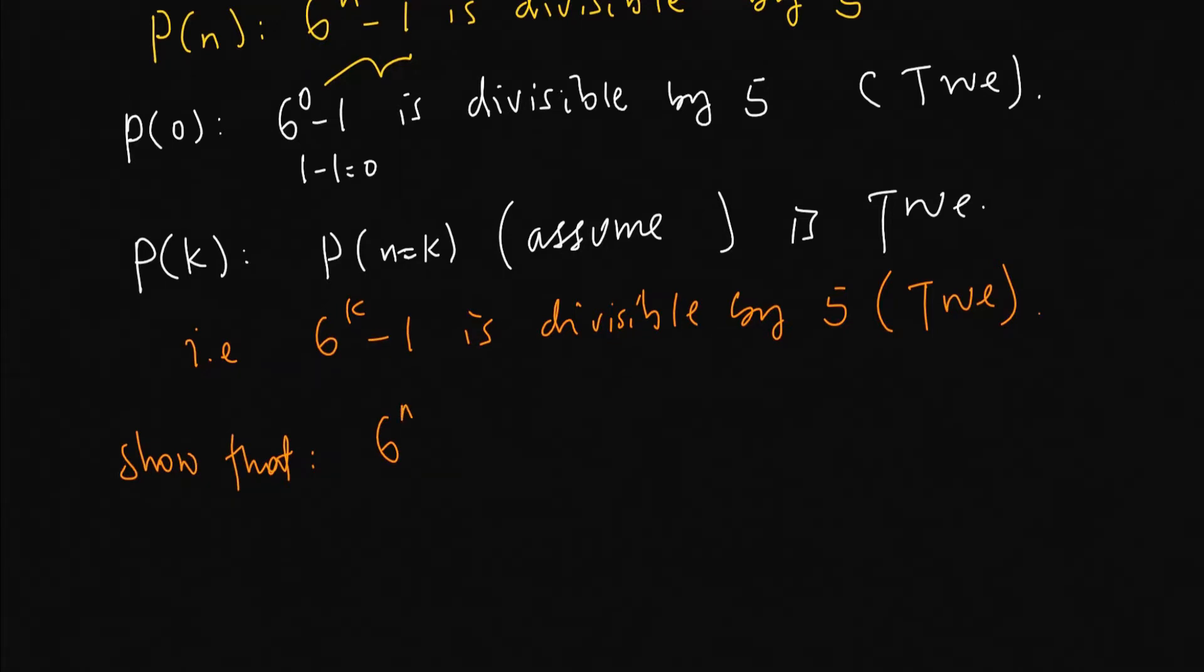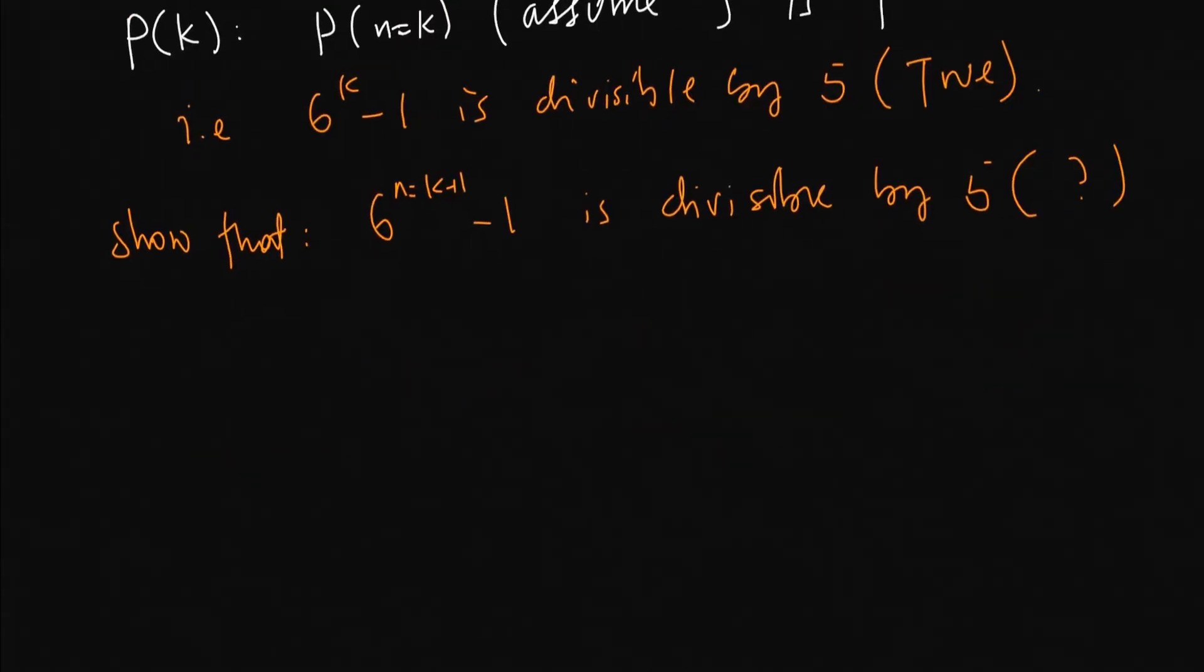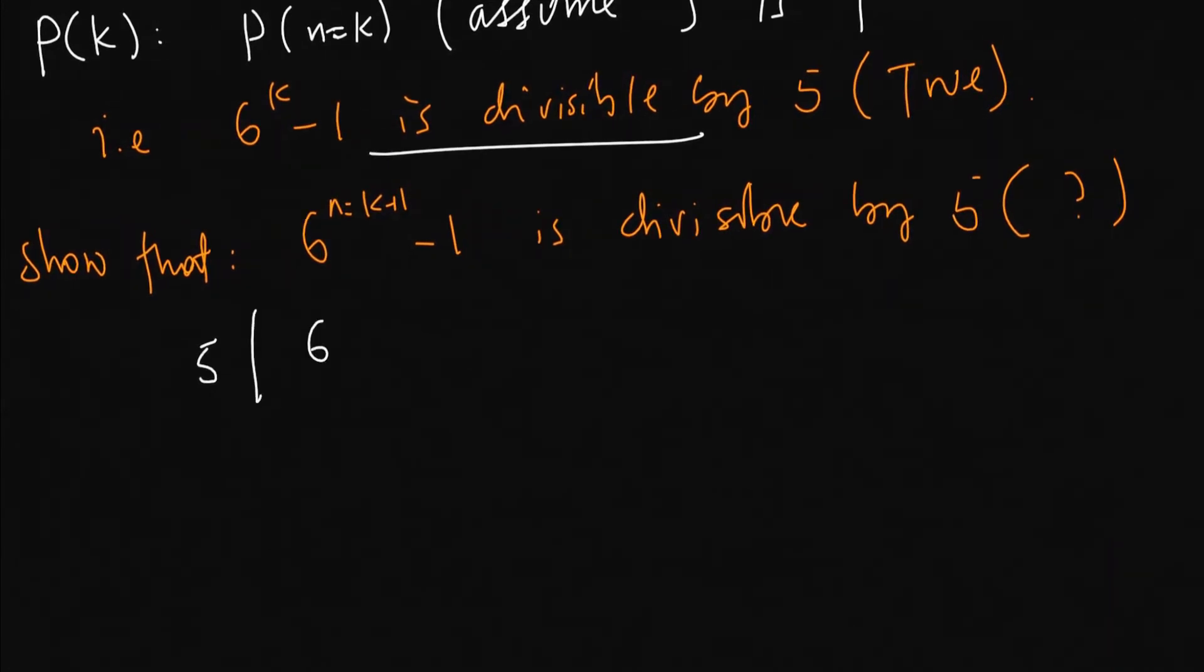Here, n which is k plus 1: 6 to the power of k plus 1 minus 1 is divisible by 5. This is what we have to show with this assumption. Our assumption is 5 divides 6 to the power of k minus 1. We have to remember how to say this: 6 to the power of k minus 1 is equal to some number m times 5, for some integer m. So now, for n equal to the next integer k plus 1...